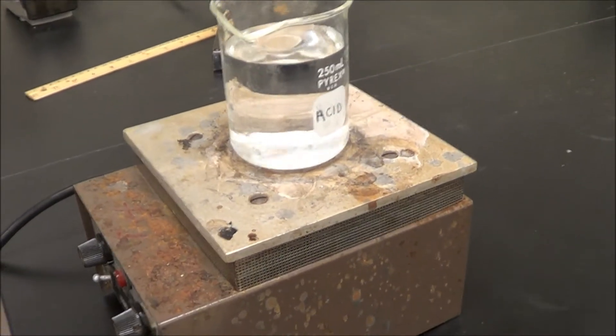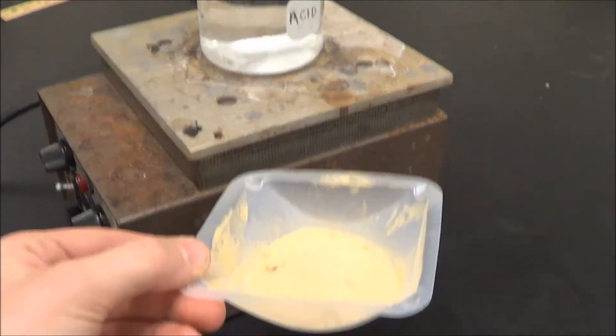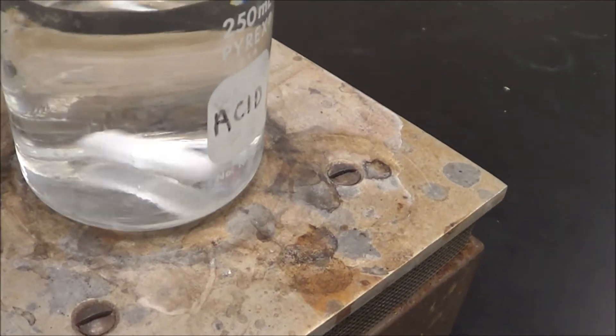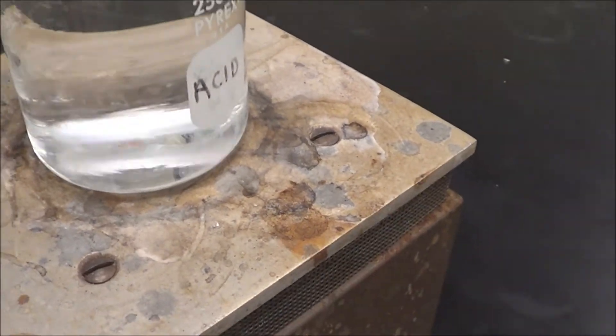Okay, so this is how we make the agar. First here we have some powdered agar and a magnetic stirrer with some distilled water in it.